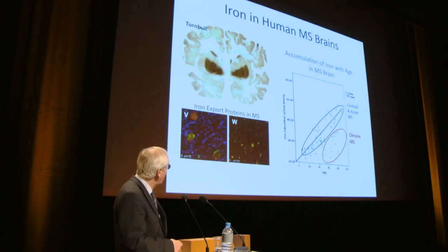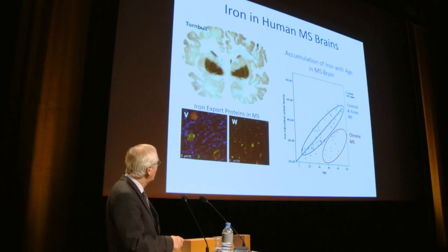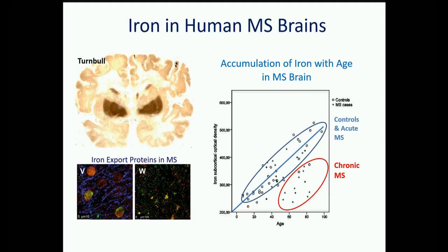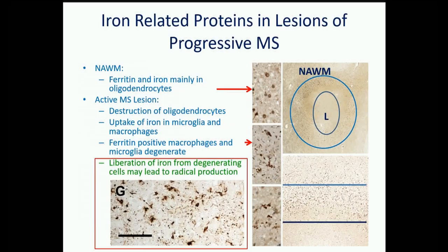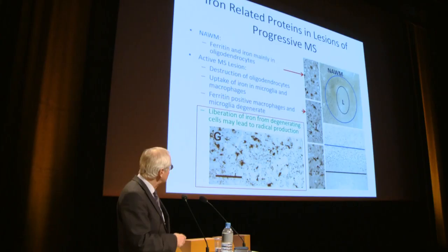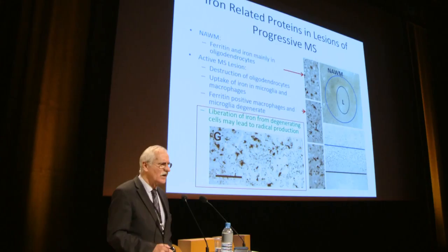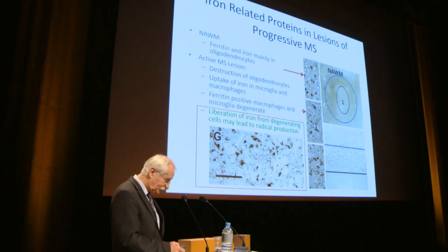When oligodendrocytes and myelin are destroyed, iron is rapidly liberated into the extracellular space, serving as a potent source of aggravated oxidative injury in lesions. It is then taken up by macrophages and microglia, which also degenerate — resulting in microglial dystrophy. While reducing iron is not therapeutically advisable due to its role in enzymatic processes, iron may be a potential marker for disability progression.